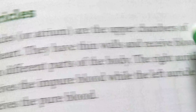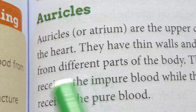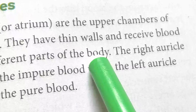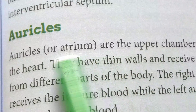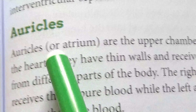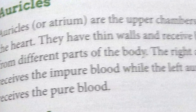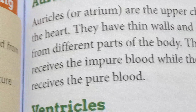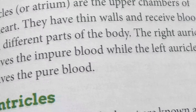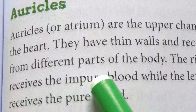Auricles are the upper chambers of the heart. They have thin walls and receive blood from different parts of the body. The right auricle receives impure blood, while the left auricle receives pure blood.